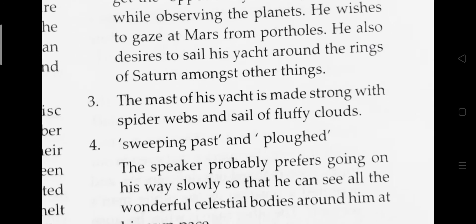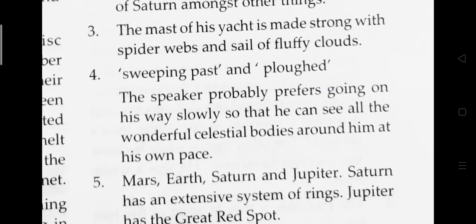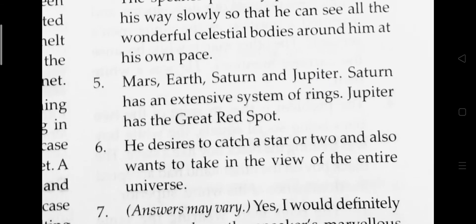Answer number three: the mast of his yacht is made strong with spider webs and a sail of fluffy clouds. Answer number four: 'sweeping past' and 'plowed' — the speaker probably prefers going on his way slowly so that he can see all the wonderful celestial bodies around him at his own pace.